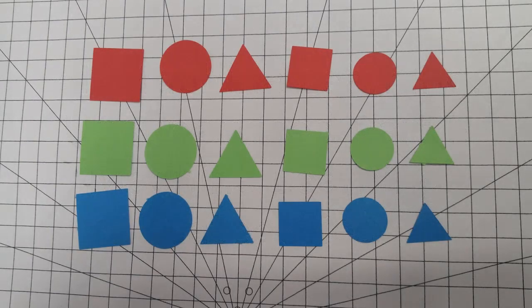In your kit, you have a set of little paper pieces. These little paper pieces could be categorized in different kinds of ways. For example, we could categorize them by shape: circles in one group, squares in another group, and triangles in a third group.